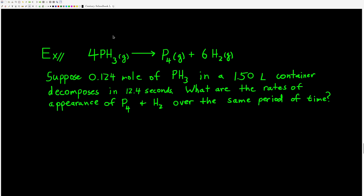Let's do an example. We have PH₃ in a 1.50-liter container that decomposes in 12.4 seconds. What are the rates of appearance of phosphorus P₄ and hydrogen H₂ over that period? There are a couple of approaches: find the change in concentration of phosphine with respect to time, divide by its coefficient (4) to get the rate, then use the rate to find the appearance rates of the two products. Why don't you work this out and come back.